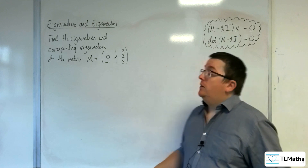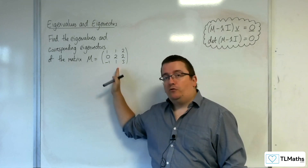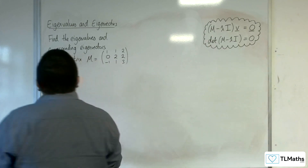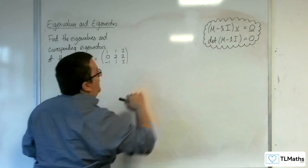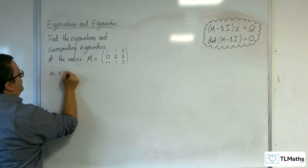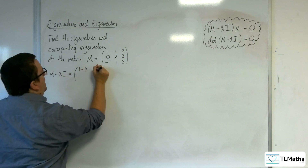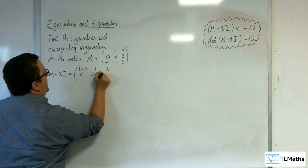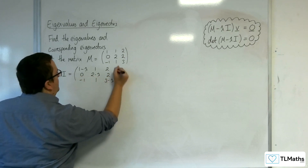In this video, we're going to be finding the eigenvalues and eigenvectors of this 3x3 matrix. So we're going straight in. The first thing we want to do is work out M minus λI. That's going to be the matrix: (1-λ), 1, 2; 0, (2-λ), 2; -1, 1, (3-λ).